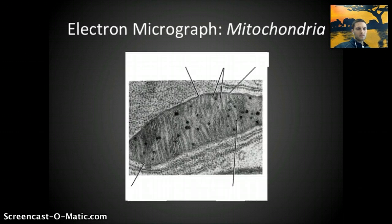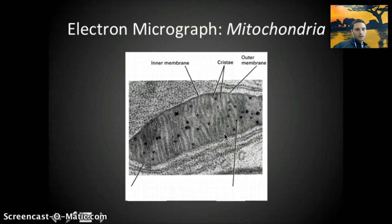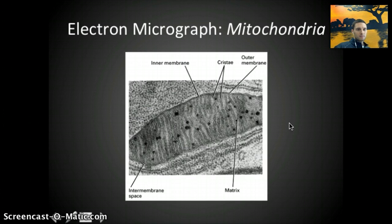As discussed, the majority of cellular respiration occurs in the mitochondria. This is an electron micrograph of a mitochondria. Mitochondria have both an inner and outer membrane, very similar to the cell itself — one piece of evidence supporting the endosymbiotic theory. There are small protruding folds on the inside called cristae, which increase the overall surface area for reactions. The area between the cristae inside the mitochondria is called the matrix, and there is an inner membrane space between the inner and outer membrane.